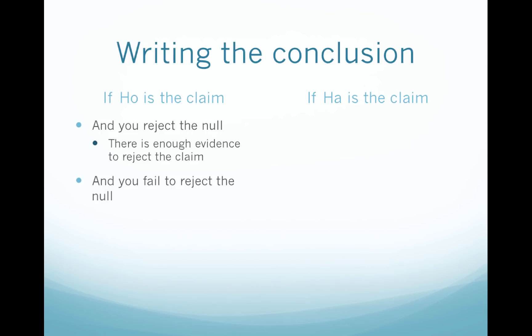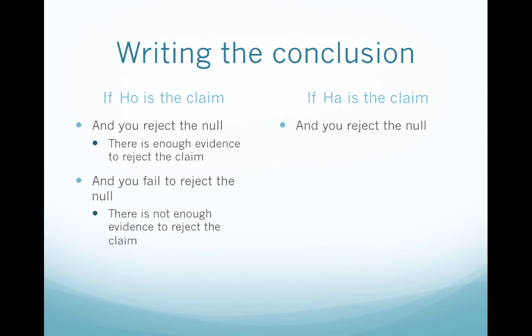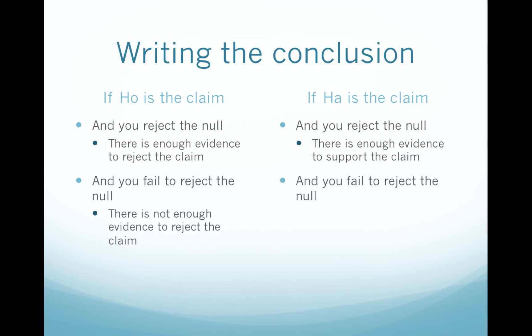If the null is the claim and we fail to reject the null, then there is not enough evidence to reject the claim. If the alternative is the claim and you reject the null, then you're supporting the claim, and we say there is enough evidence to support the claim. If the alternative is the claim and you fail to reject the null, then there is not enough evidence to support the claim. You need to know these four conclusions — with enough practice, your life goes on repeat with one of them.